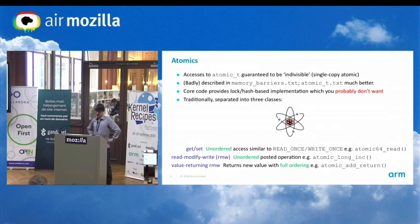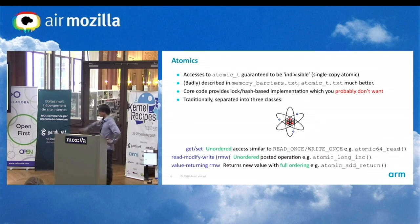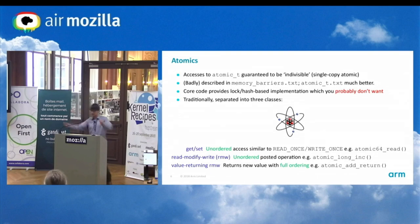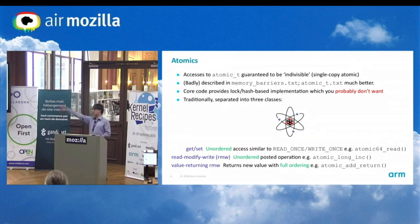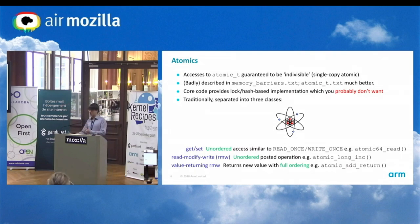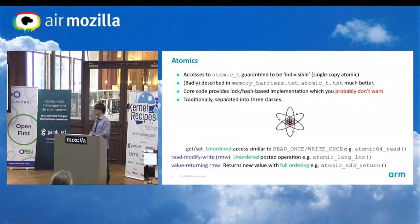Traditionally, atomic_t is separated into three classes of operation. There's the get/sets, which are unordered — very similar to read_once and write_once; an example is atomic64_read. Then we have unordered read-modify-writes — what I call posted operations, meaning they're void, they don't give you any data back. And if you want to know the value, you can use value-returning RMW, which has full ordering — an example is atomic_add_return, which gives you back the value that's been added to.